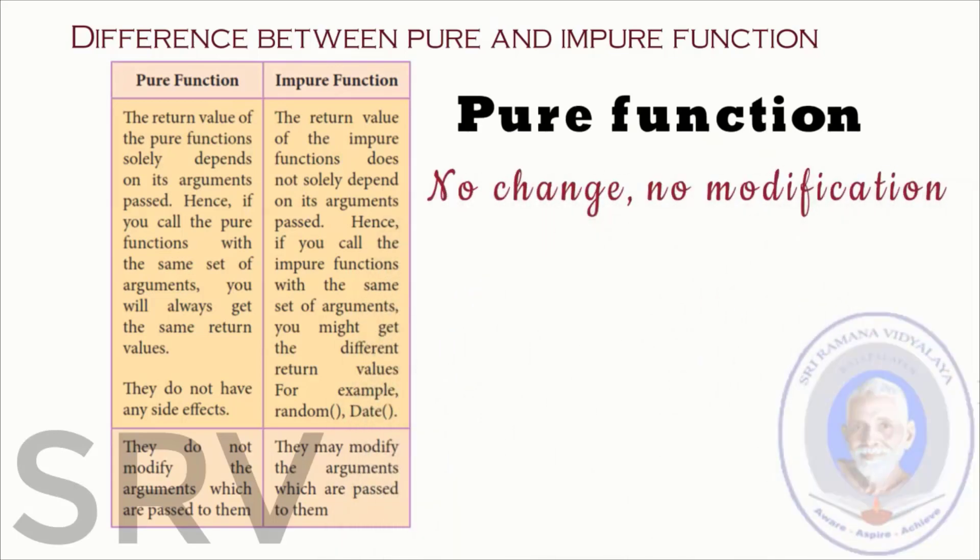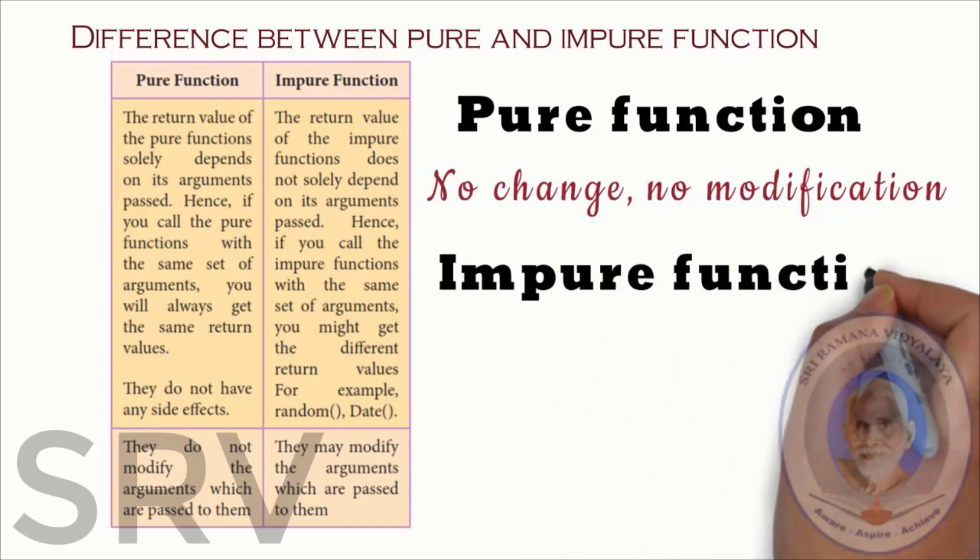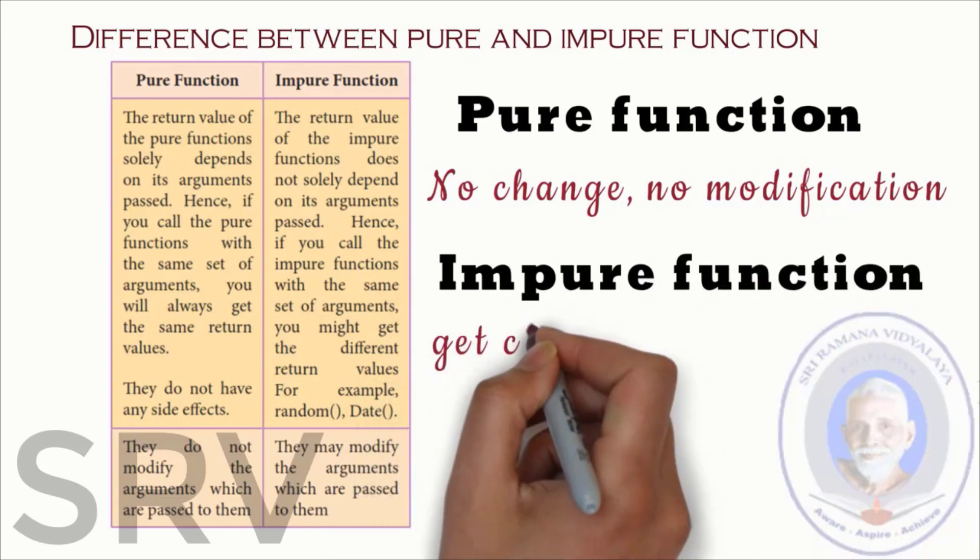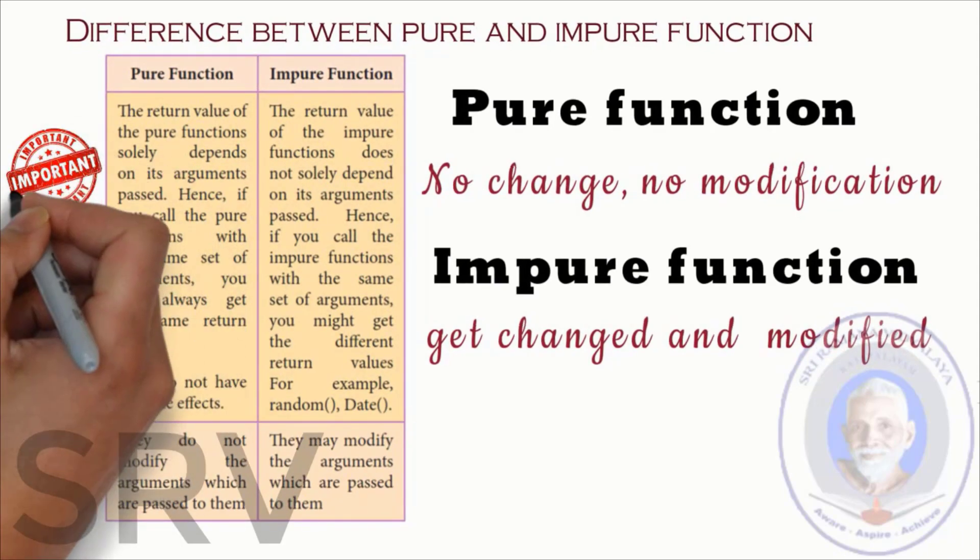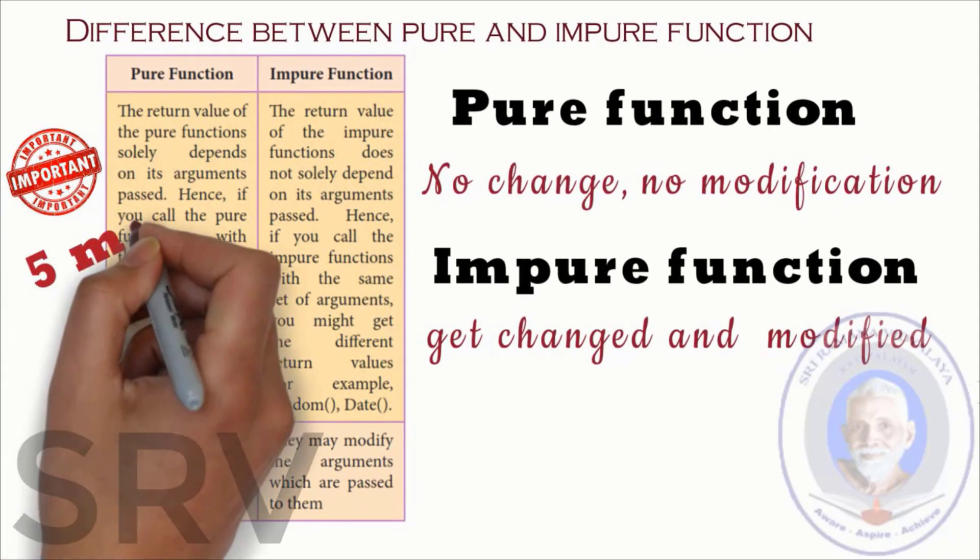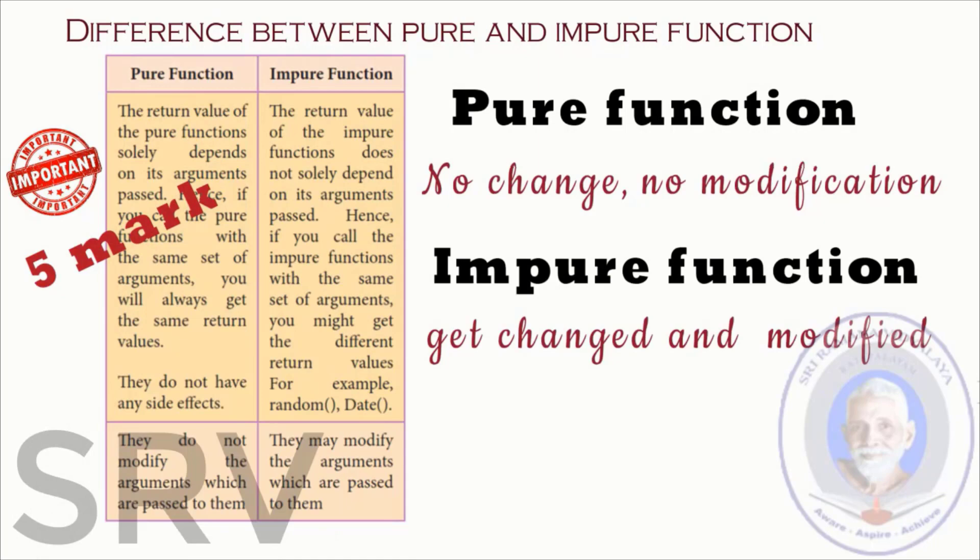In impure function they may modify the arguments which are passed to them. So pure function no change no modification. For impure function get changed and modified. These are the difference for pure and impure function. This is an important mark question. So mark it and study it.